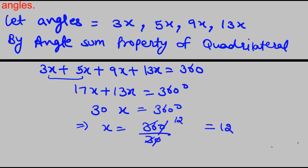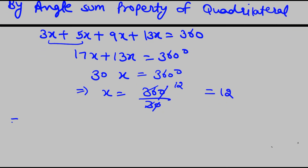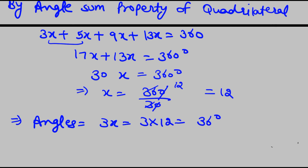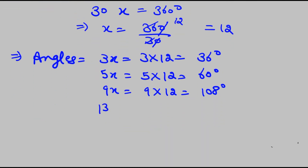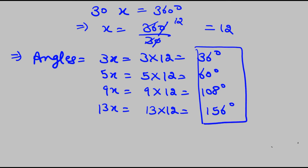Now substituting x = 12 back into each angle: 3x = 3 × 12 = 36°, 5x = 5 × 12 = 60°, 9x = 9 × 12 = 108°, and 13x = 13 × 12 = 156°. These four angles are our answer.